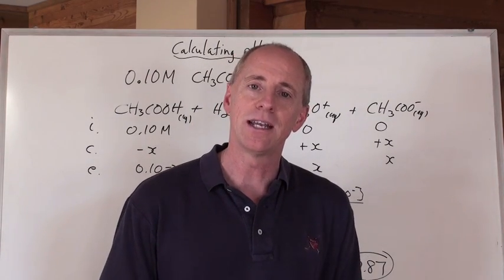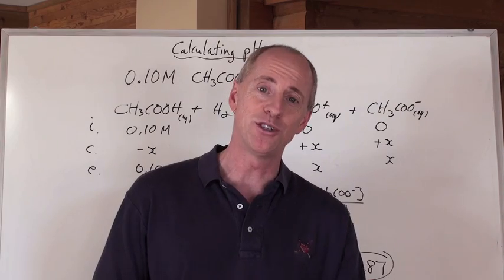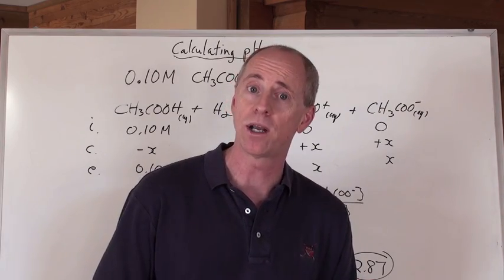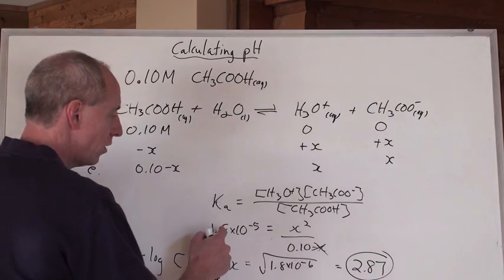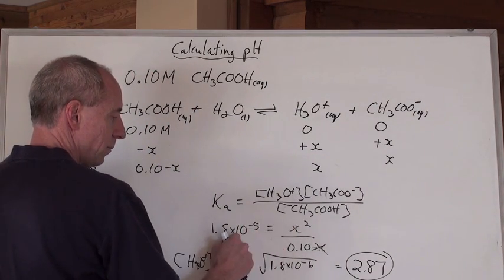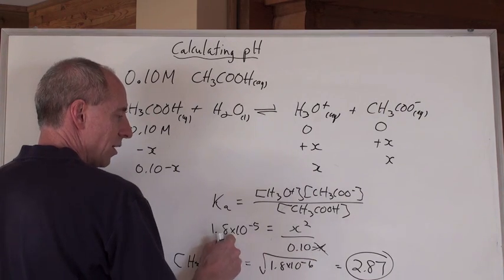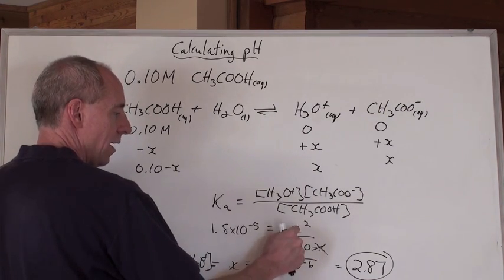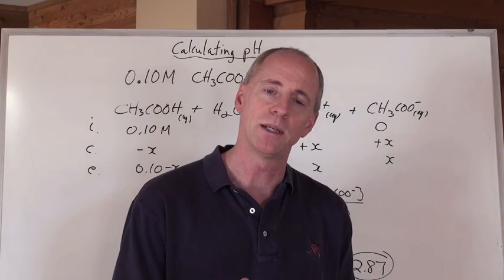This is how you calculate the pH of a weak substance. And what's it always going to degrade into, really, so you can do the question a little bit quicker instead of having a whole ICE box to do, it's always going to be Ka equals X squared over the concentration. So really, just take the concentration times the K value and take the square root of that, and that's the hydronium ion concentration. It'll always break down that simply into that.